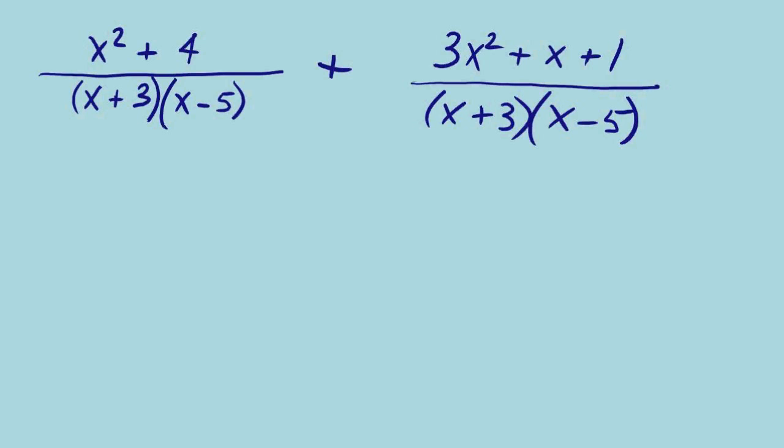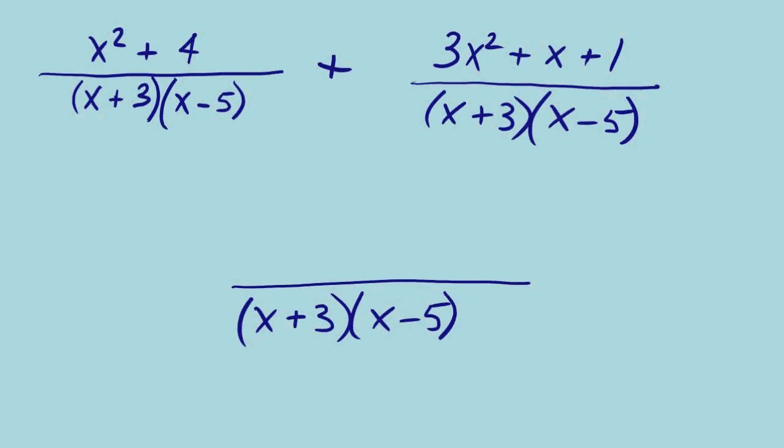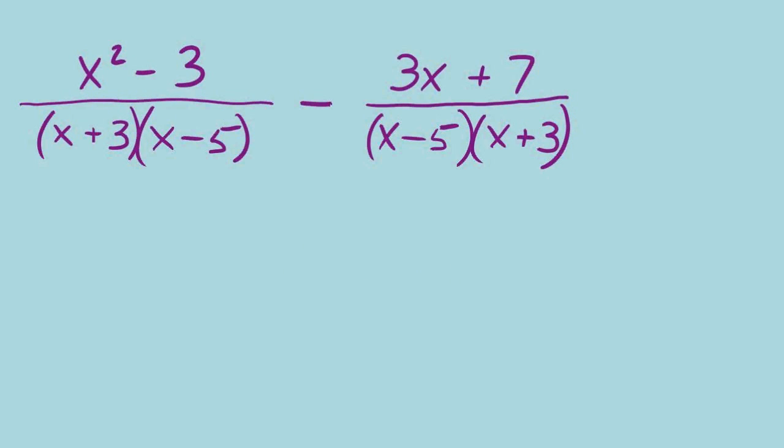This problem comes to us in great shape — the denominators are already the same. If you think back to adding or subtracting fractions, it's much easier once the denominators match. Our answer will have that same denominator, and we just need to combine our numerators. Since our numerators are polynomials, we combine like terms: x squared plus 3x squared makes 4x squared. We keep terms in descending order, bring down the x, and the constants positive 4 plus positive 1 make positive 5.